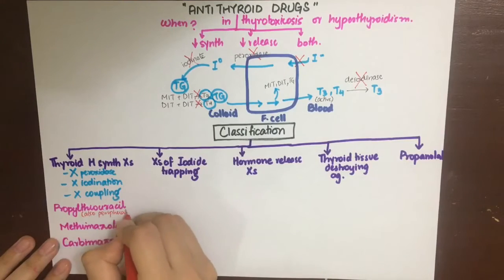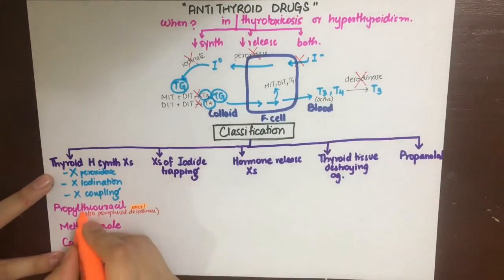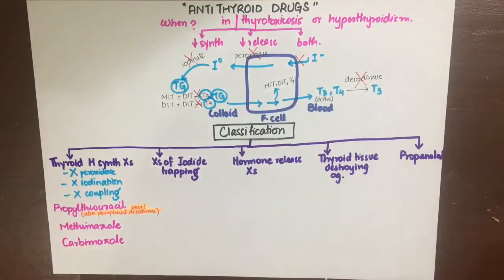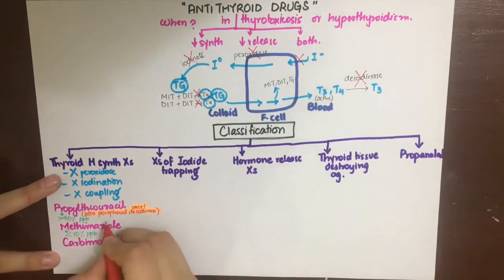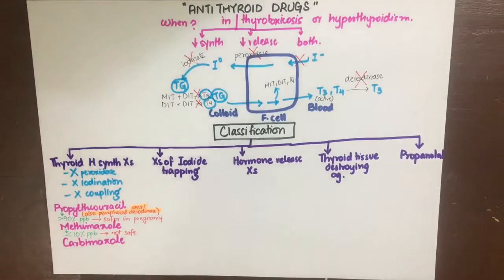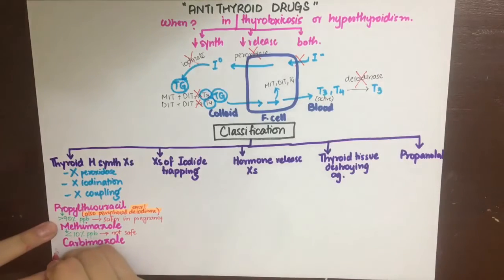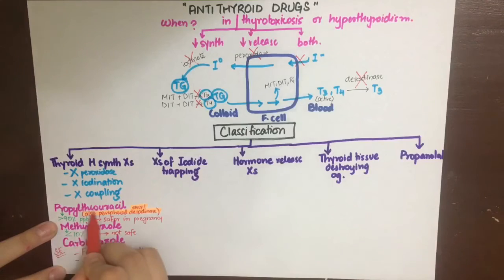Propylthiouracil is highly plasma protein bound — more than 90% — so it is safer in pregnancy than methimazole, which is less than 10% plasma protein bound and not safe. If methimazole is used in pregnancy, it will cause fetal hypothyroidism with neurological and bone abnormalities. These drugs also cause skin rash due to the thio (sulfur) group causing allergies. A dangerous, rare, and treatment-limiting side effect is agranulocytosis, which is a hypersensitivity reaction. During therapy, blood tests should be done weekly to monitor the blood count.